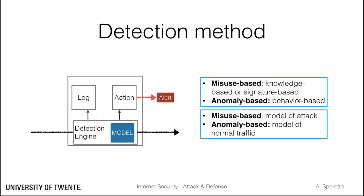An anomaly-based IDS assumes that all traffic that deviates from the model of normality will be an attack. The advantage here is that new attacks can be detected. However, building a model of normal traffic might be complex, and of course not all anomalies are attacks.